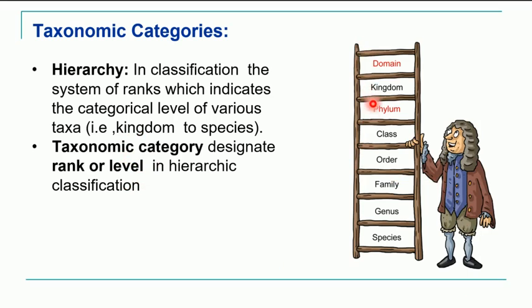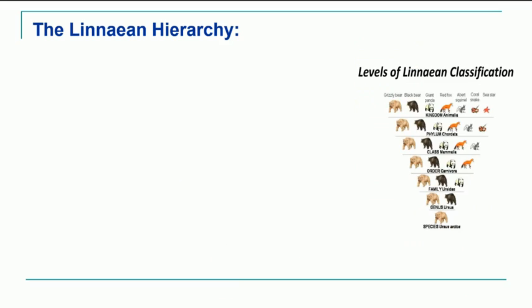Kingdom, phylum, class, order — all these are nothing but the taxonomic categories. Linnaeus was the first to propose this hierarchy, so it is also referred to as the Linnaean hierarchy. He was the first taxonomist to establish a definite hierarchy of taxonomic categories. He recognized only five basic categories: class, order, genus, species, and varieties.